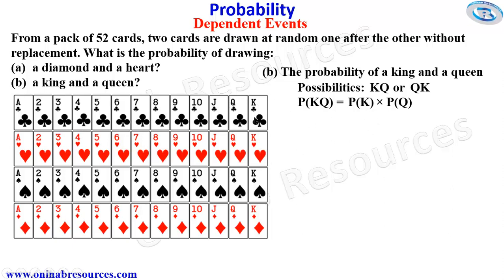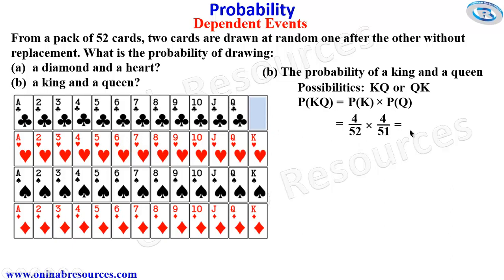The probability of picking king is going to be 4 over 52, since there are 4 cards with king. So we have it as 4 over 52. One of the cards with king is gone, so the total number of cards is now 51. Then the probability of picking queen from the remaining cards is going to be 4 over 51 — there are 4 cards with queen out of the remaining 51. So this will give us 4 over 663.